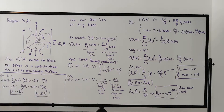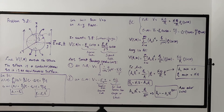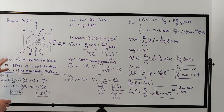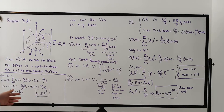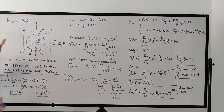This problem is essentially the same as example 3.8 in the book that Griffiths does. The only difference is that in example 3.8, the sphere placed in the field had no charge on it — it was uncharged — whereas this sphere is charged. So the question is: how does adding charge to the sphere affect the potential?